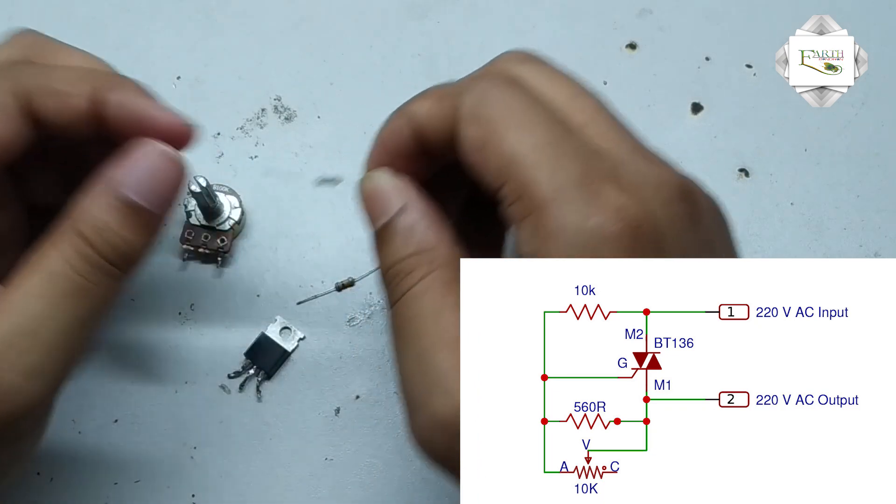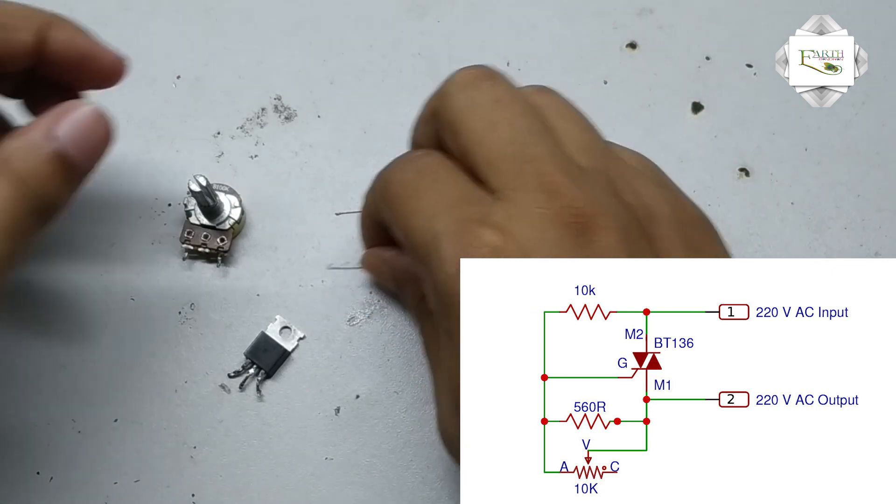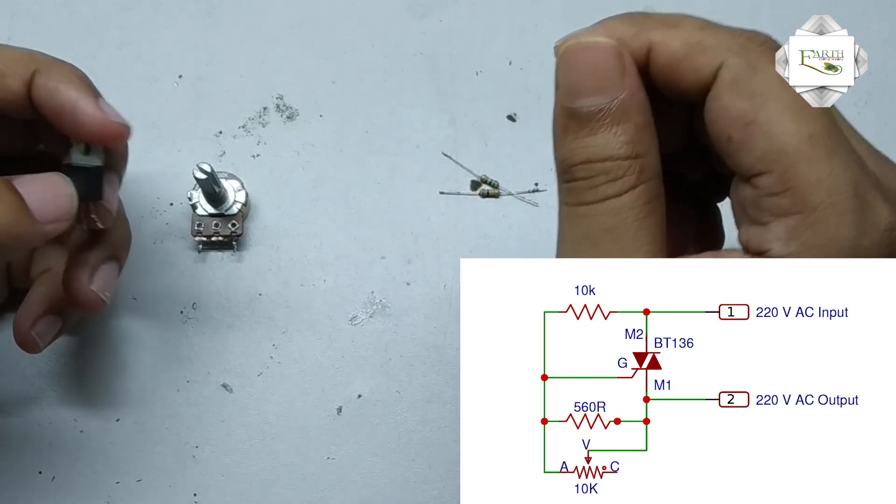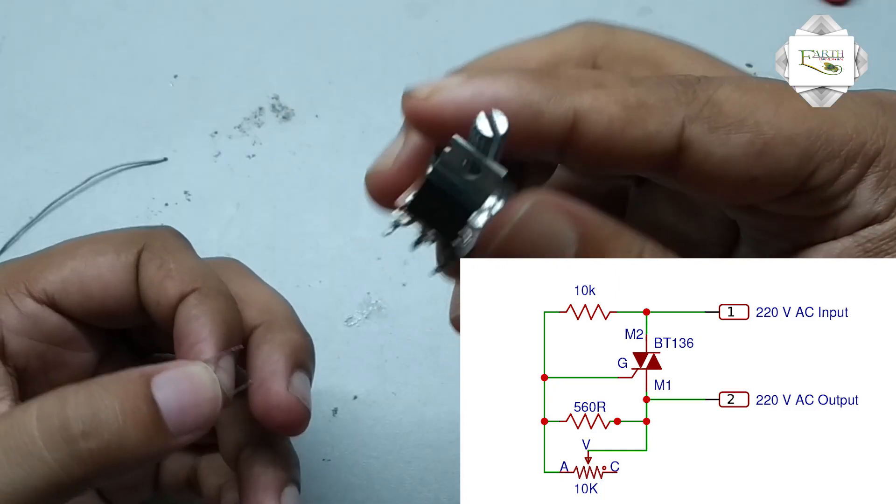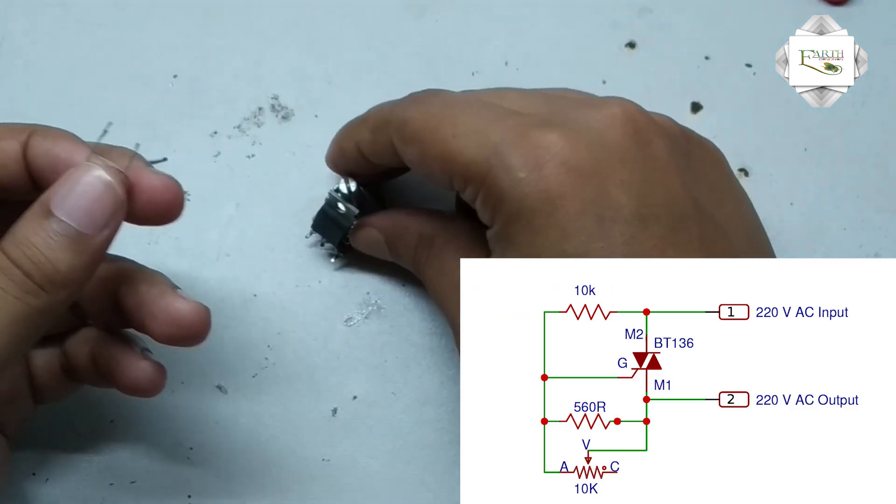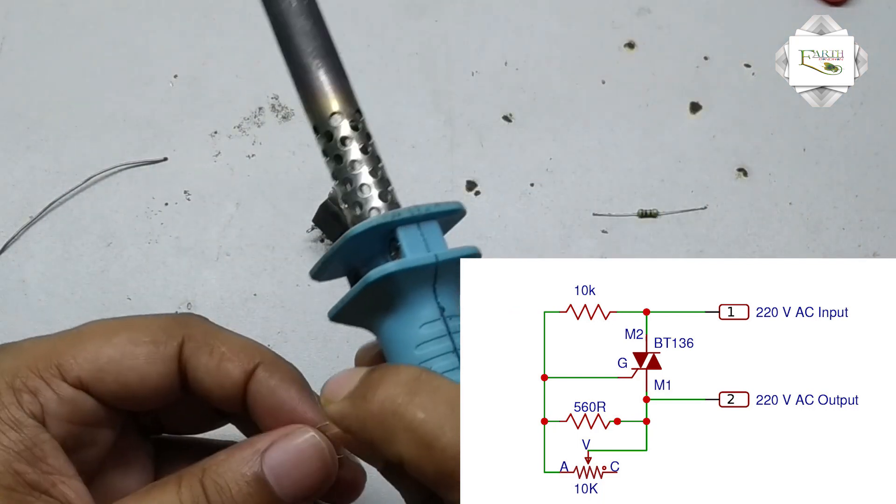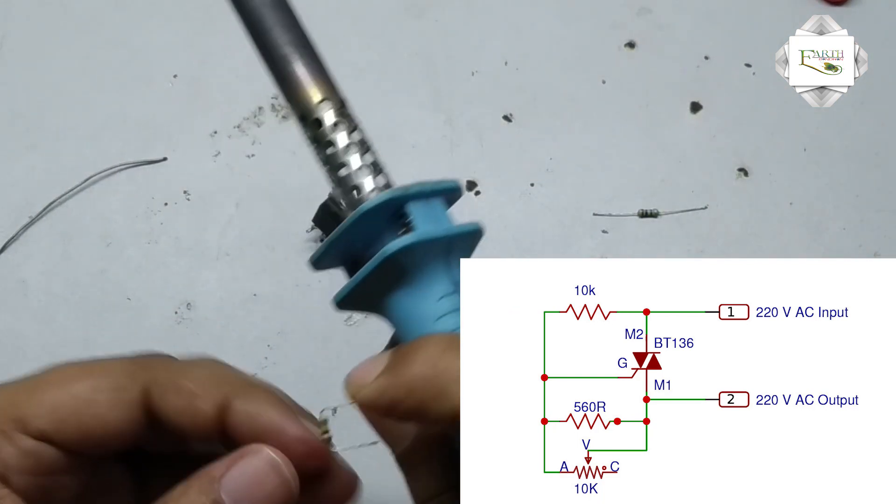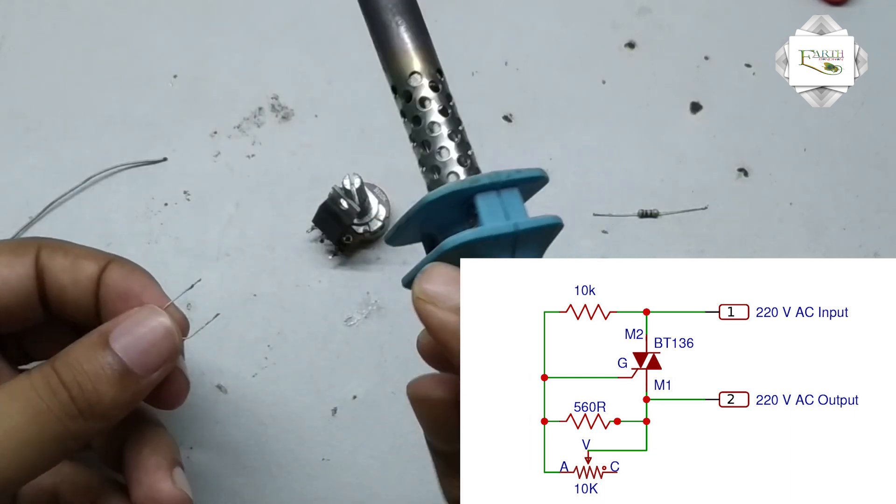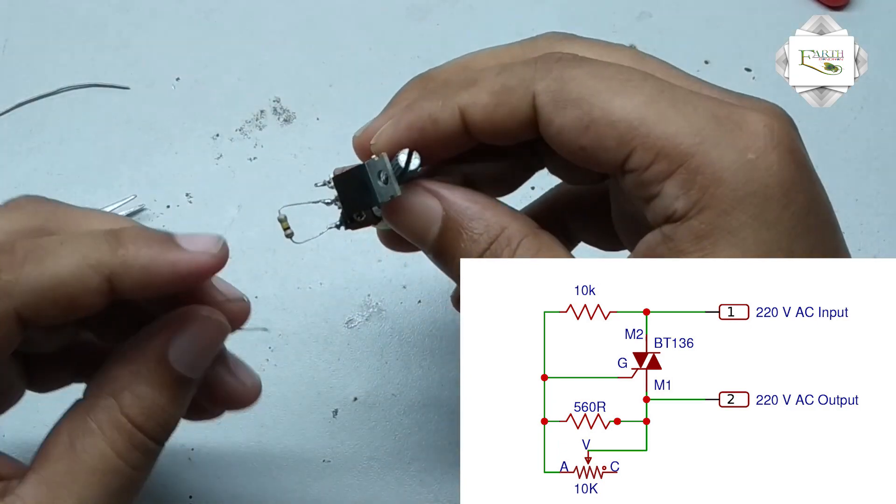This is a very small circuit. First I connected the IC and variable resistor, then I connected the 100K resistor. 100K resistor connected to pin number 2 of IC and input of variable resistor.